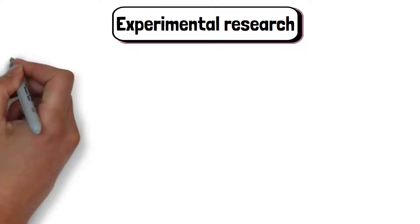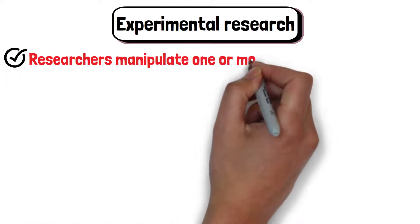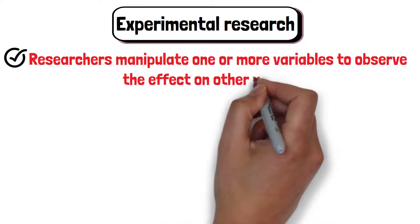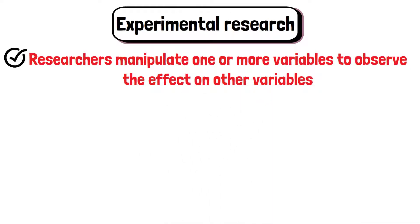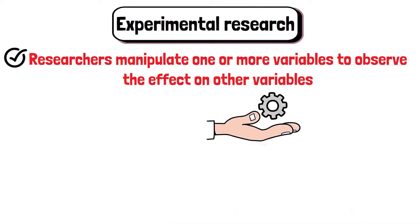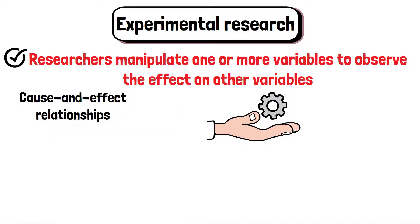Experimental research is a method where researchers manipulate one or more variables to observe the effect on other variables while controlling external factors. The goal is to establish cause and effect relationships.